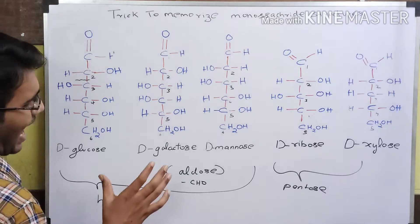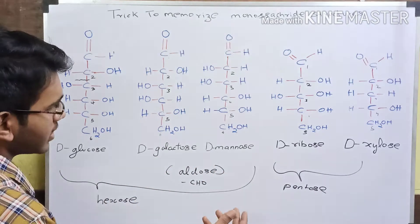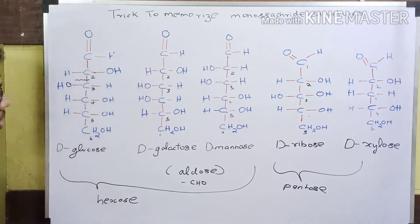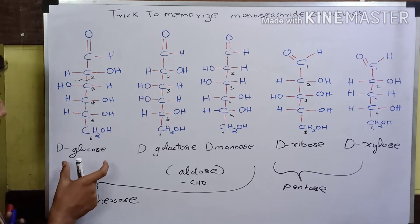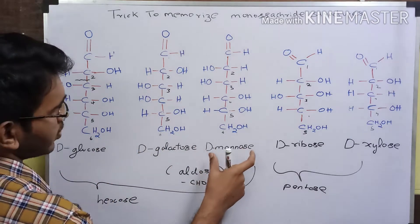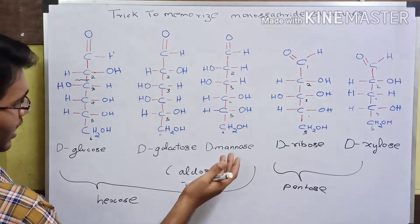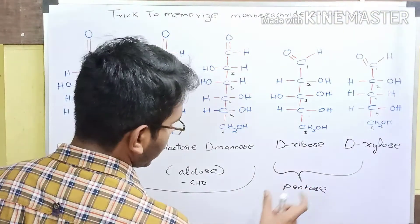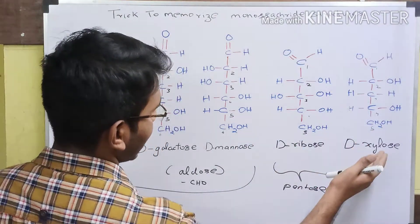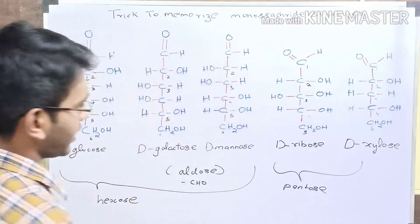Here we have the structures of aldoses alone. We can see the structure of ketoses in the later part of this video. The aldoses shown are glucose, galactose, mannose, ribose, and xylose. Glucose, galactose, and mannose are hexoses — they contain 6 carbon atoms. Ribose and xylose are pentoses — they contain 5 carbon atoms.